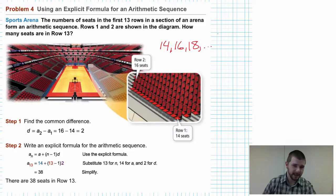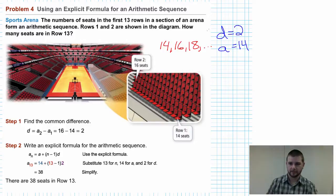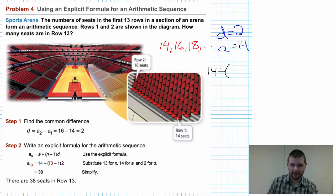So to restate that, our common difference is 2. Our initial value a, or a sub 1, is 14. Therefore, our 13th term, as we've learned previously, will be our first term plus n, which for us n is going to be 13, n minus 1, so 12 times our common difference, 2.